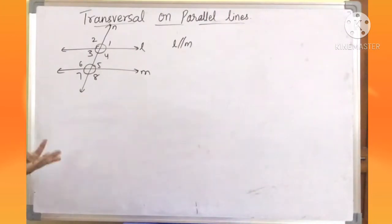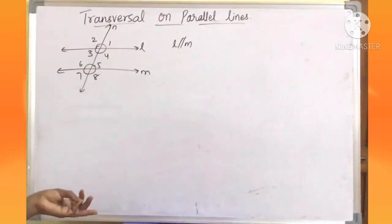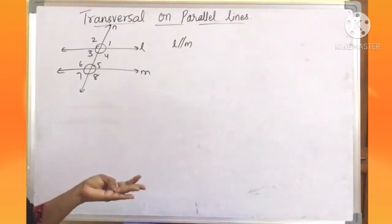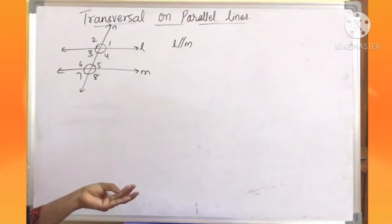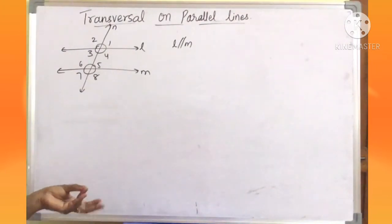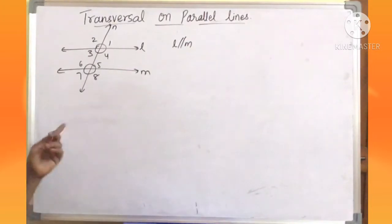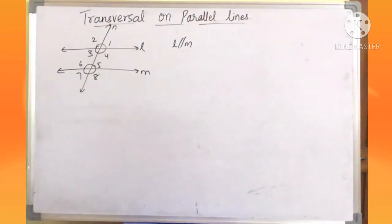In the last video I discussed the angles made by the transversal. Totally we have nine pairs of angles: interior angles, exterior angles, vertically opposite angles, linear pair, corresponding angles, alternate interior angles, alternate exterior angles, interior angles on the same side of a transversal, and exterior angles on the same side of a transversal.